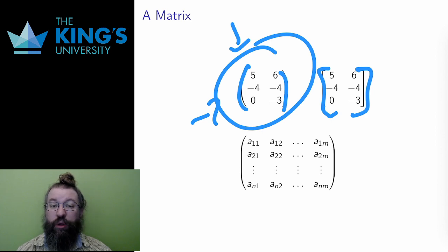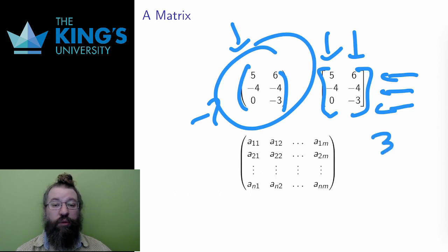A matrix has some number of rows and columns. This one has three rows and two columns. To refer to this, I sometimes state the size, saying that this is a three-by-two matrix. When I say number-by-number, the first number is always the number of rows, and the second number is always the number of columns.